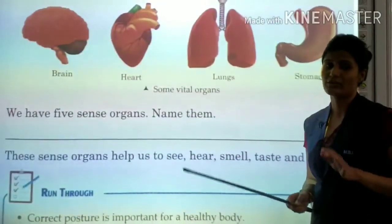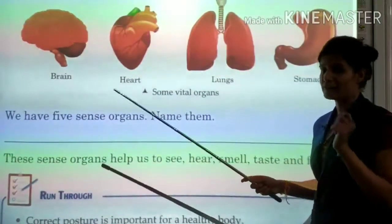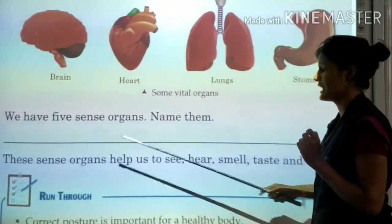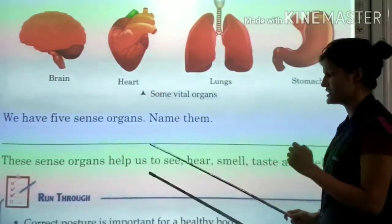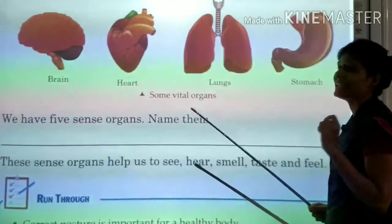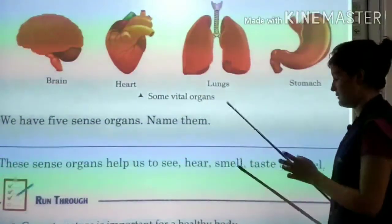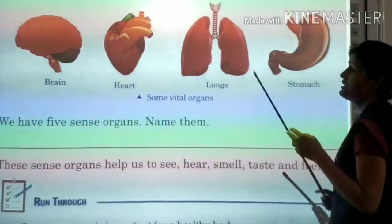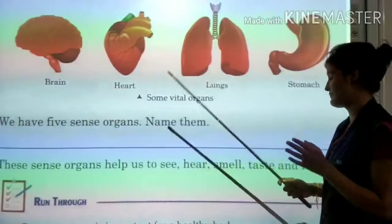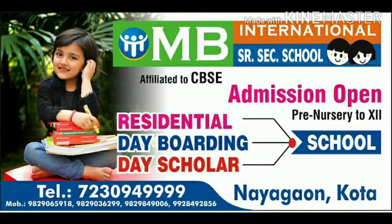We have 5 sense organs. Eyes help us to see. Ears help us to hear. Nose helps us to smell. Tongue helps us to taste. Skin is a sense organ which helps us to feel. Here we have completed chapter number 5, 'Our Body'. Thank you.